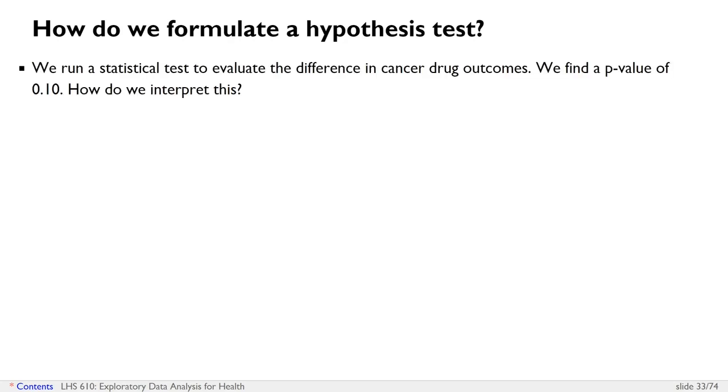So let's say we run a statistical test to evaluate the difference in cancer drug outcomes, and we find a p-value of 0.10. So notice I didn't really even say what the test was that I was running. And obviously the p-value is only going to be interpretable if you know what the test is, because the test might be a test of correlation, it might be a test of differences in means. But regardless, we can still have some general interpretation of the p-value without even necessarily knowing the exact test.